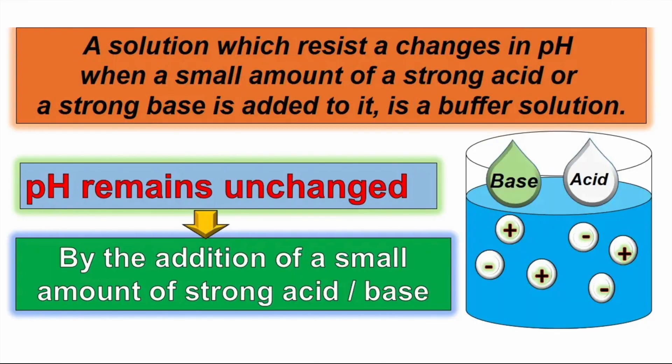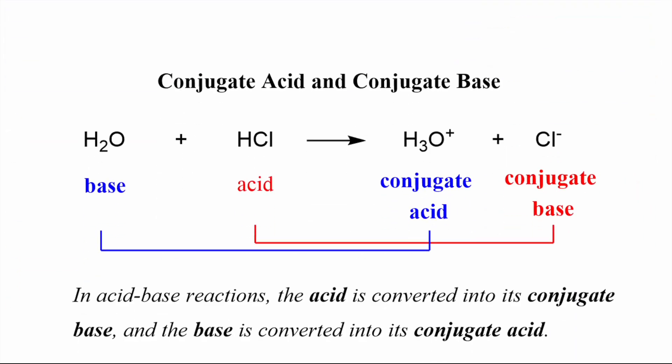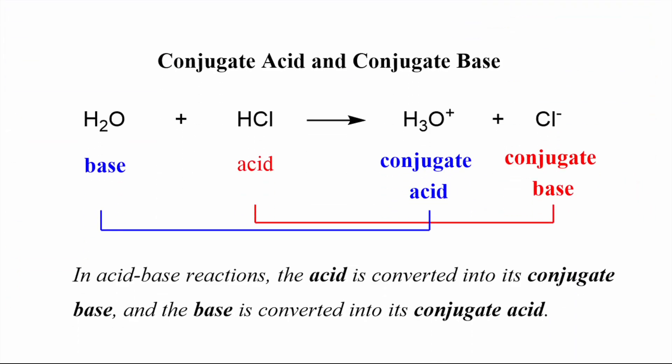A buffer is a solution that can resist changes in pH when small amounts of acid or base are added to it. Buffers are usually comprised of a weak acid and its conjugate base, or a weak base and its conjugate acid. The presence of both allows the buffer to maintain a relatively stable pH. For example, hydrogen chloride acts as the acid and water as the base. HCl donates its proton to water, becoming a chloride ion Cl-, while water becomes H3O+. So the conjugate base for HCl is Cl-, and the conjugate acid for water is H3O+.